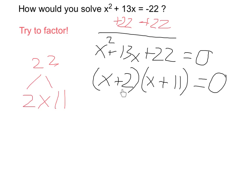Because if either this is zero, or if this is zero, the whole thing is zero. Therefore, x has to equal either negative 2 or negative 11.